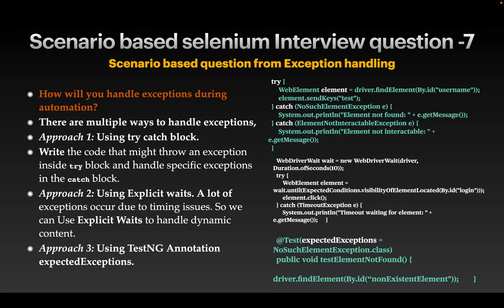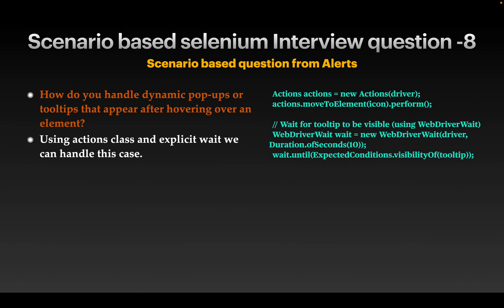Next question: how will you handle exceptions during automation? This is asked in almost all automation interviews, but many people answer only with try-catch. Explain multiple ways: one is using try-catch, where code that might throw an exception goes inside the try block and is handled in the catch block. Another approach is using explicit waits, since many exceptions occur due to timing issues. A third approach is using the @Test annotation's expectedExceptions attribute.